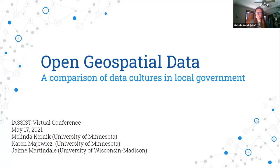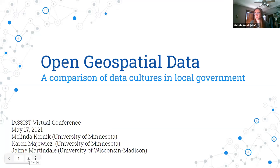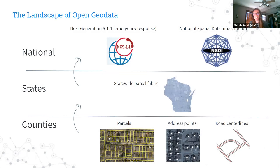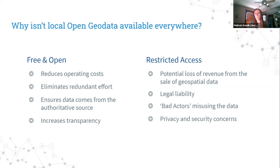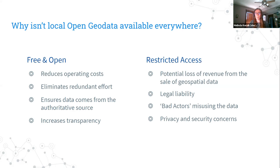Hello everyone, thanks for joining us today for this comparison of data cultures in local governments. In the United States, county and municipal governments are primary creators of foundational geospatial data, including layers like parcels, address points, and road centerlines. This data is often aggregated to create state and national frameworks such as state parcel fabric and Next Generation 911 emergency layers. Despite the importance of these foundational layers, policies about whether this data is free and open to the public varies drastically from place to place.